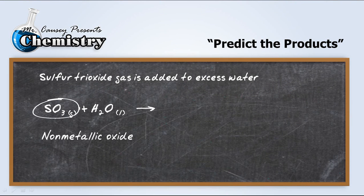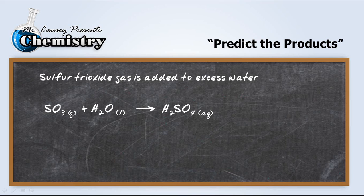And SO3 is a nonmetallic oxide, and water mixed with a nonmetallic oxide will give us an acid. So SO3 and H2O would be sulfuric acid, H2SO4. That's a synthesis reaction, and it's automatically balanced. Oh, I love it when that happens.